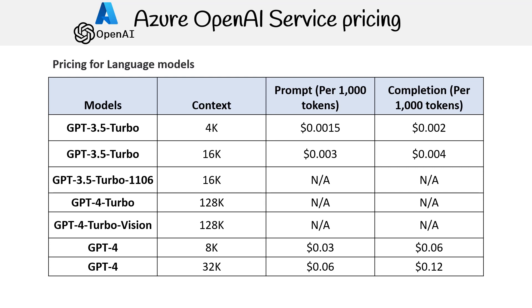The standard GPT-4 model with an 8k token context costs 3 cents for prompts and 6 cents for completions. A larger context version of GPT-4 with 32k tokens costs 6 cents for prompts and 12 cents for completions.